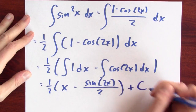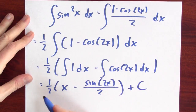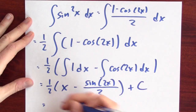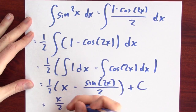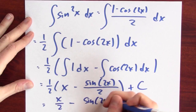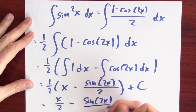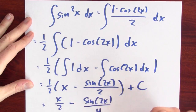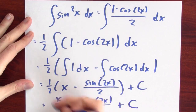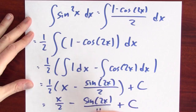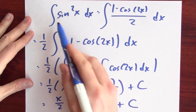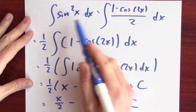Adding plus C, I can simplify this as x over 2 minus sine 2x over 4 plus C. And there's the general anti-derivative for sine squared x.